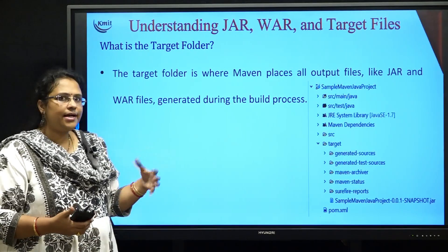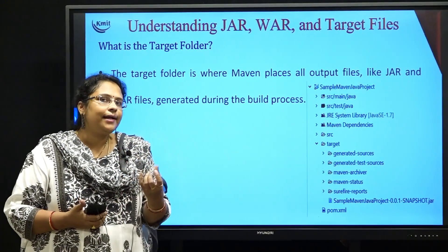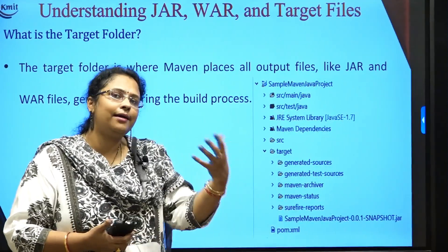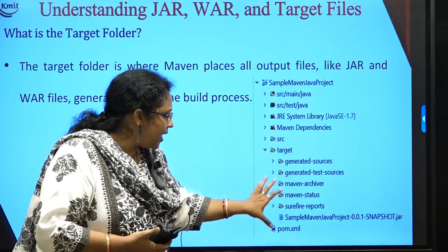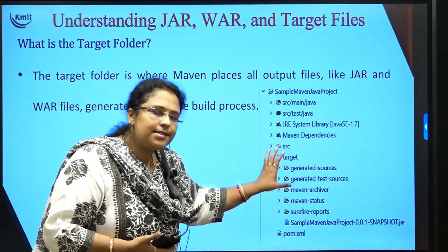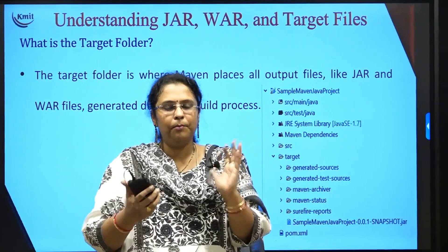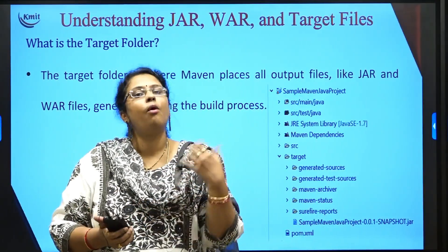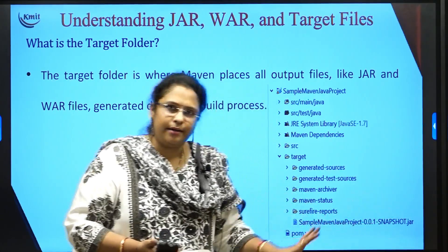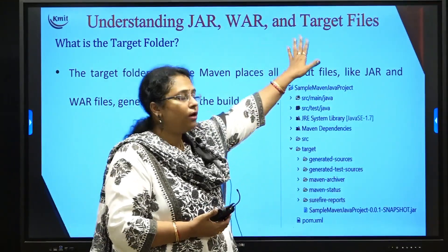While converting into jar files and war files, whatever the Maven build tool creates, it will automatically create one folder called the target folder, as you can see here. The target folder is automatically created by your Maven build tool. Inside this target folder you can see the final jar copy of your project is created. Along with that, whatever other dependencies are there for your particular project, all these are stored in the target folder. The target folder contains the complete output file of your project which is now ready for deployment.